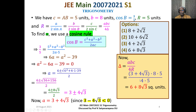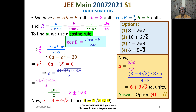Our answer 6 plus 8 root 3 appears as option 4, so our final answer is option 4. Thus we have come to the end of the discussion. Problems from trigonometry require many formulae, so prepare a chart of formulae and remember them. Work out more problems on these lines from a standard textbook. I wish you all the best — thank you.